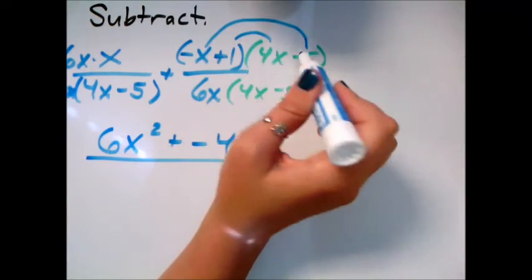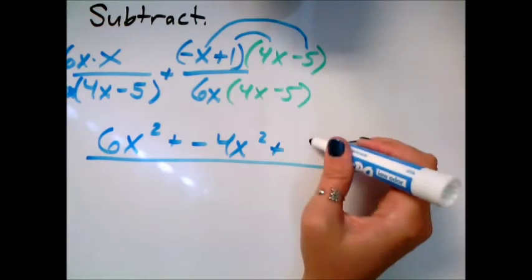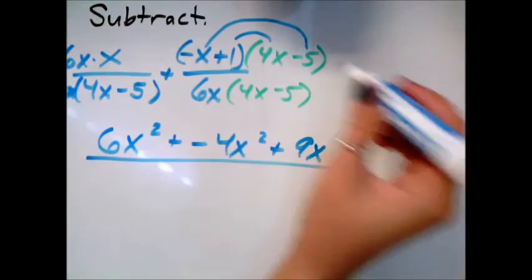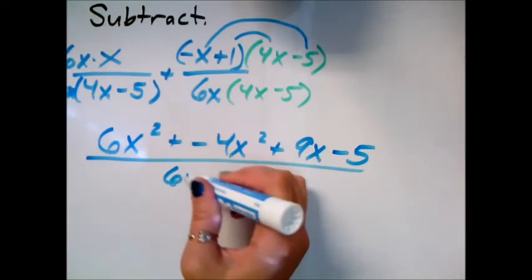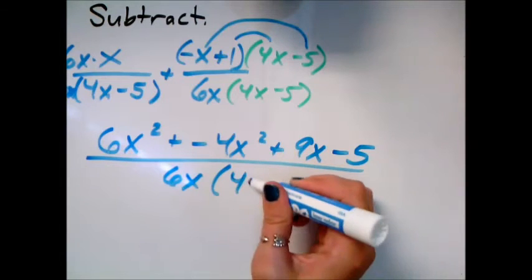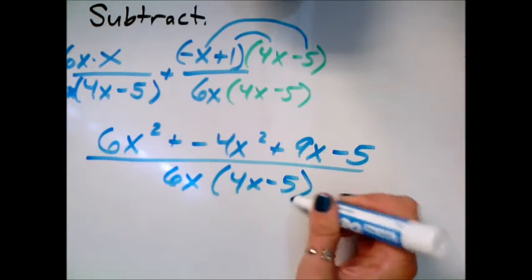My inside is 4x, and outside is 5x because negative times a negative, so that makes it plus 9x, and then minus 5. And now they both have the same denominator, which is 6x times this other factor.